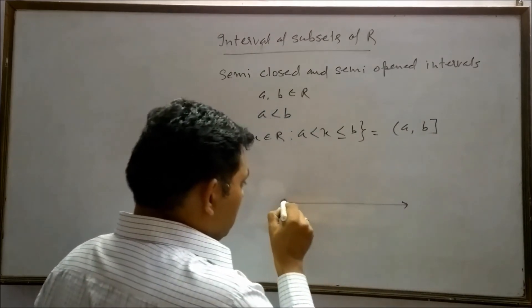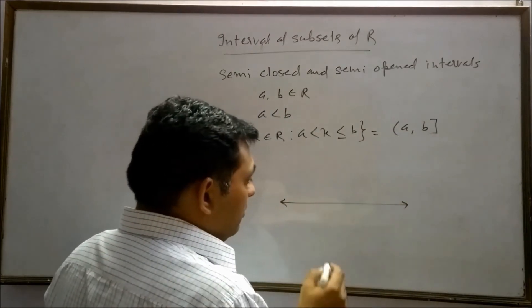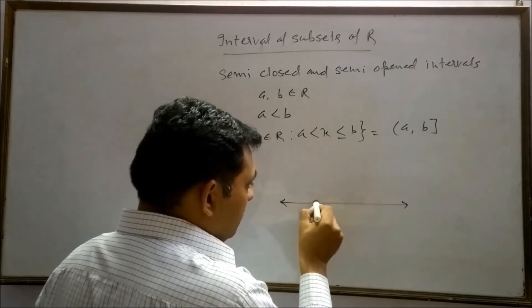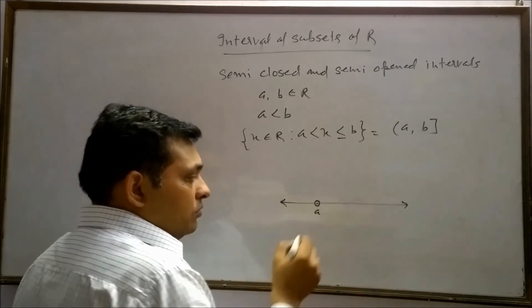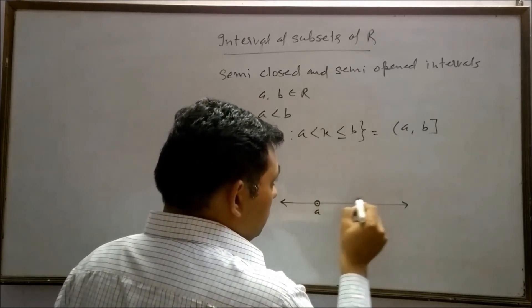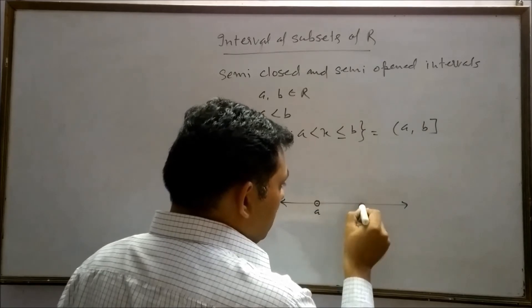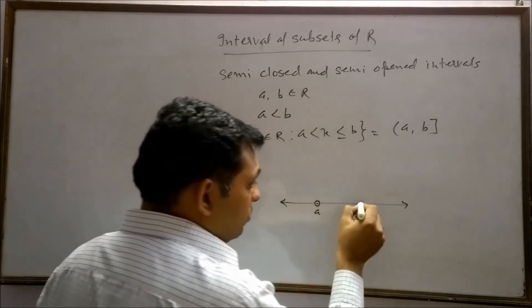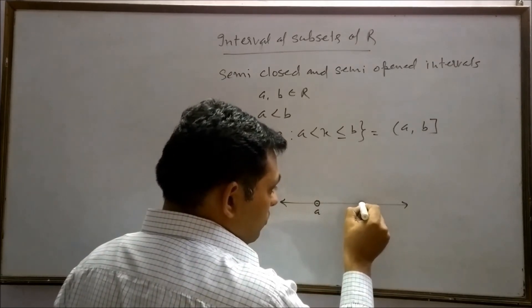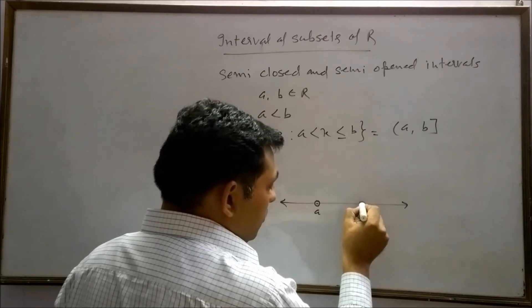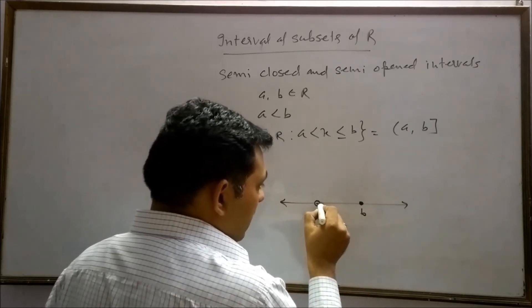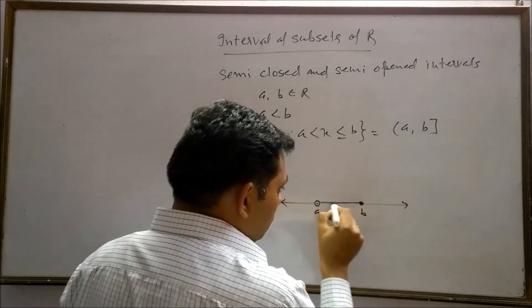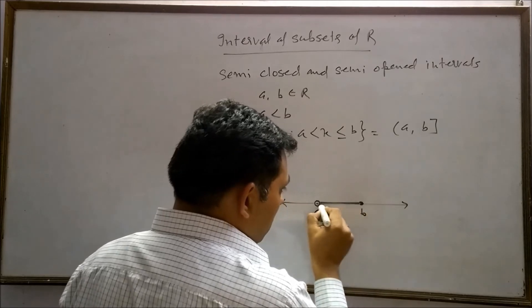We can represent the interval (a, b] on the real number line as follows: since a is not included, we draw an open (unshaded) circle at a. Since b is included in the set, point b is darkened. The region between a and b is also drawn as a dark line.